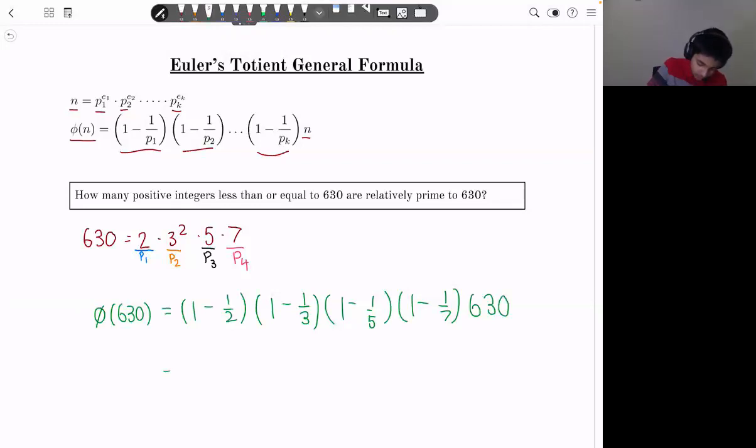And this is equal to 1 half times 2 thirds times 4 fifths times 6 sevenths times 630. So now we can cancel the 2s. The 3 cancels and gives a 2 there. And we're left with 8. We have this 2 here and the 4 here left. So you have 8 over 35 times 630, which is, well, you can just see that 630 is 9 times 70, or 18 times 35. So it's just going to be 18 times 8, which is 144.